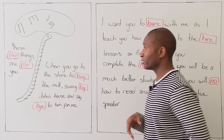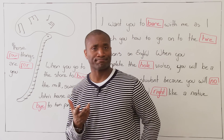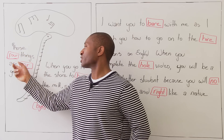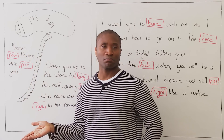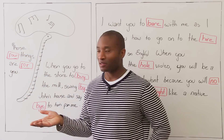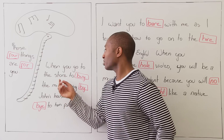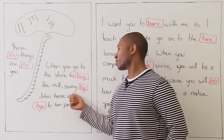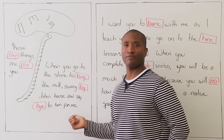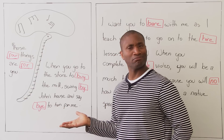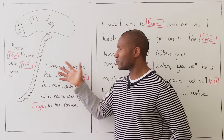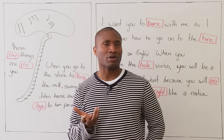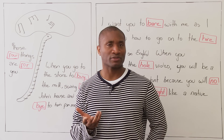I want to show you something. I'm sure you've heard this before, right? English people say, 'Those four things are for you.' How about this? When you go to the store to buy the milk, swing by John's house and say bye to him for me. Now, a few of these words sound the same, but we know the meanings are not the same. And this is what we talk about with homonyms.